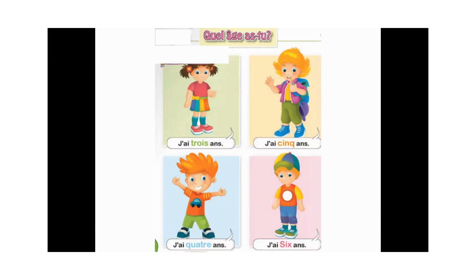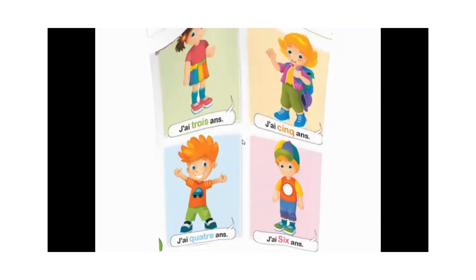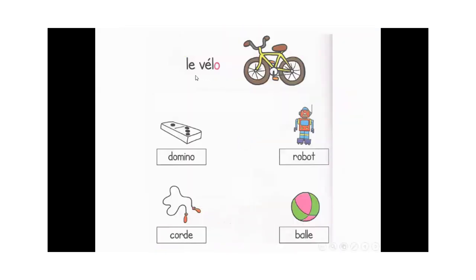J'ai cinq ans. J'ai quatre ans. J'ai six ans. Quel âge as-tu ? J'ai trois ans. Quel âge as-tu ? J'ai cinq ans. Quel âge as-tu ? J'ai quatre ans. Quel âge as-tu ? J'ai six ans.